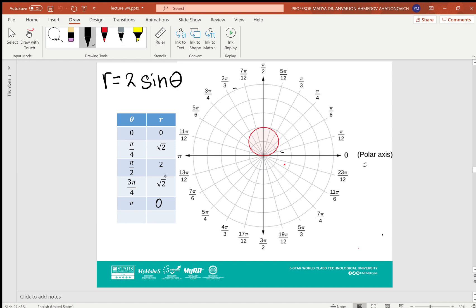For example, at π/4, the length is √2 in this direction. At π/2 it's 2, you can see in the picture. At 3π/4, this length is √2. And at π it's 0, coming back here. If we connect these points, we obtain this circle shown in red color.